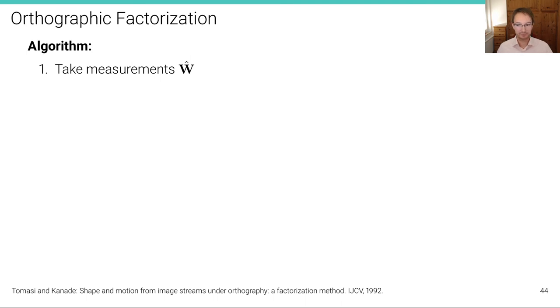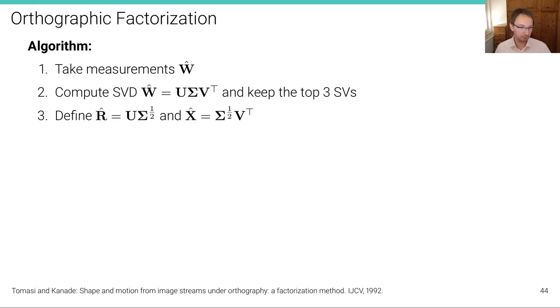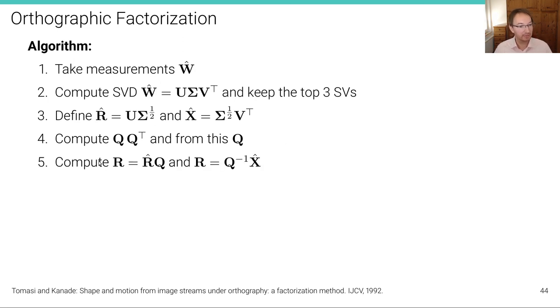And here's an overview over the algorithm summarizing it. We take measurements Ŵ that are not necessarily rank-three because of measurement noise. So, we compute the SVD of this and keep the top three singular values and vectors. And then, we define R̂ and X̂ as these expressions here. We compute then QQ^T from this. And from there, we compute Q. And then, our final R and our final X are computed by multiplying this with Q.